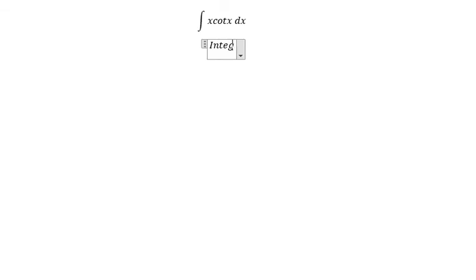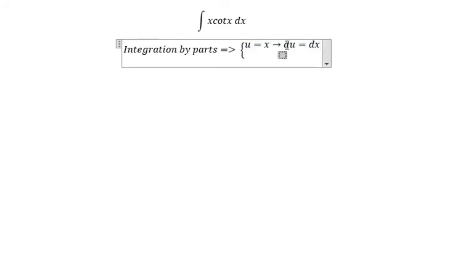We need to use integration by parts. So now we have u equal to s, du equal to ds, dv equal to cot s ds. About cot s we got cosine s over sine s.